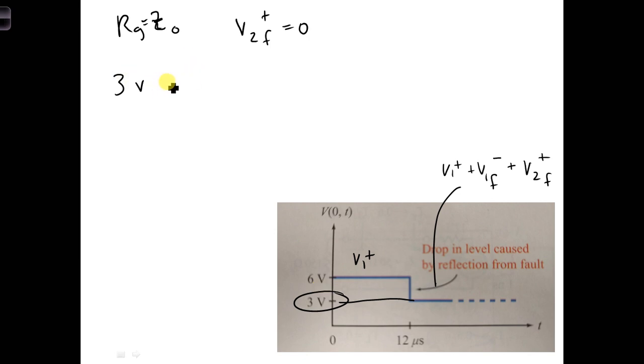So at 12 microseconds, we get 3 volts, and that is equal to V1 plus plus V1F minus, since we determined that this one is equal to 0. We know V1 plus, that was given here, so that's 6 volts, and now we just need to find V1F. We can find that, solving for that, we get minus 3 volts.